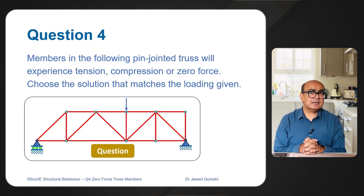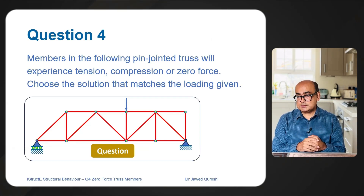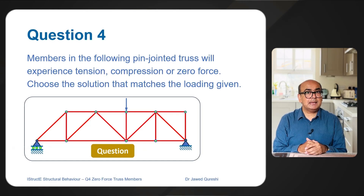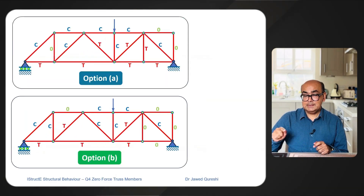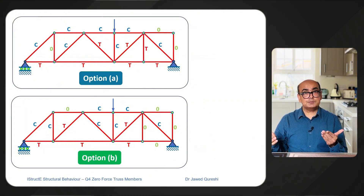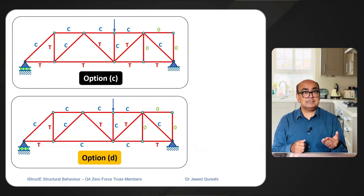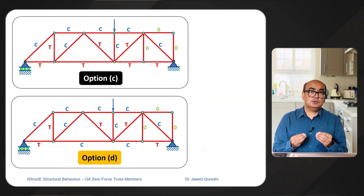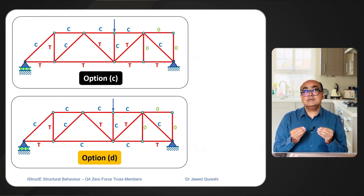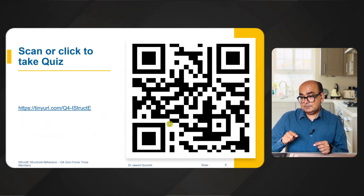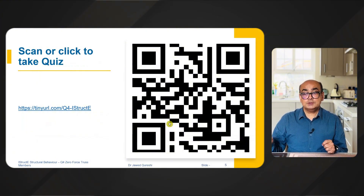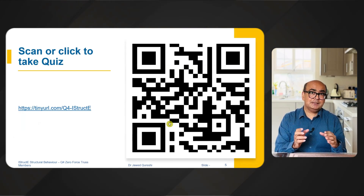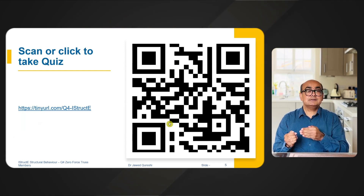This is the example I will be solving today. Members in this pin-jointed truss will experience tension, compression, or zero force. Choose the solution that matches with the loading. Here are options A, B, C, and D. If you want to try it, pause this video and have a go yourself. You can also go to the URL or scan the barcode to attempt the quiz first, then watch the explanation.